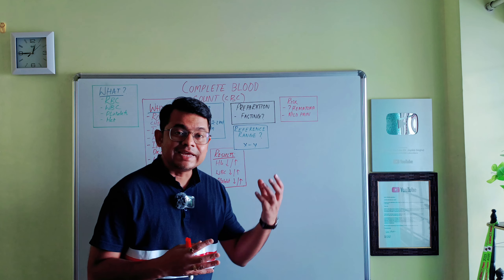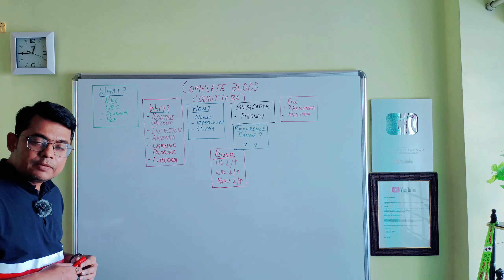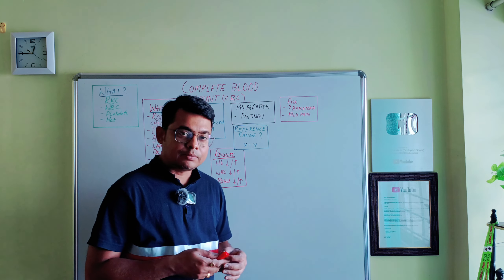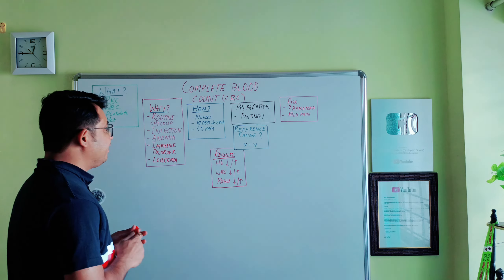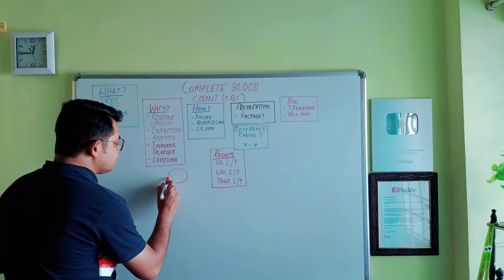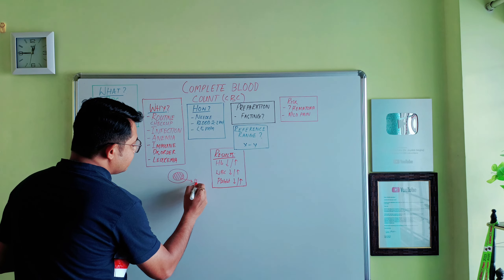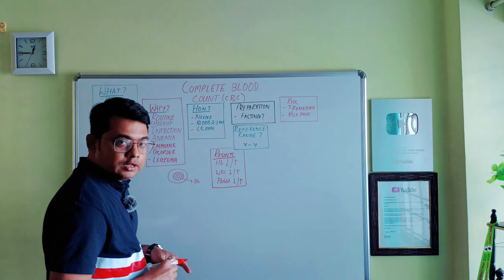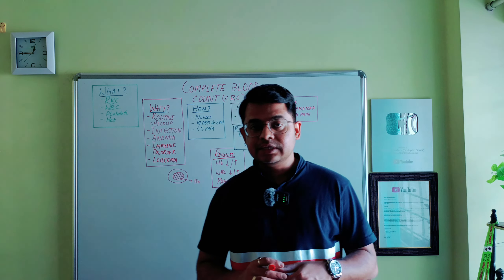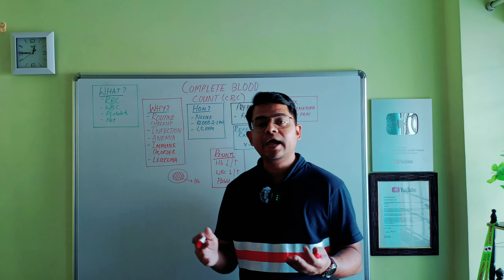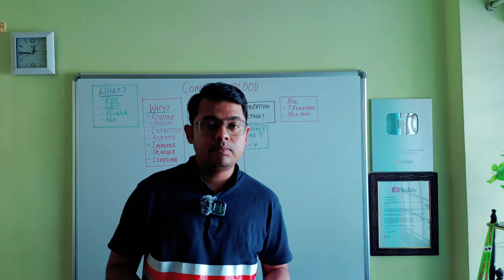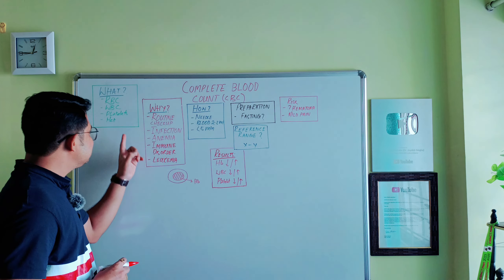Before going into the topic, let's understand what blood is. Blood is a liquid connective tissue of our body and is essential for the normal functioning of all organs and systems. Blood is comprised of a liquid portion known as plasma and a cellular portion known as blood corpuscles.